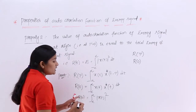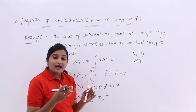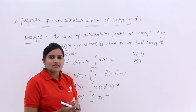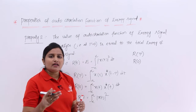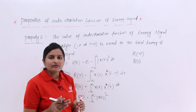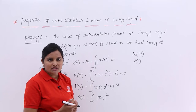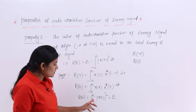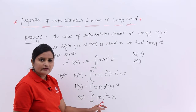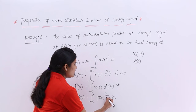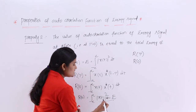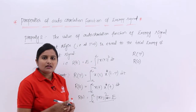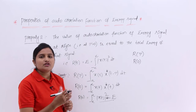This is R(0). But you know the formula for energy — when we discussed energy and power signals, energy of a signal is equivalent to the integral of the square of the signal. That means the integral of |x(t)|² dt gives you the energy of the signal. According to that, we can say this is nothing but the energy of the signal, because here also we are doing the integration of |x(t)|² dt. So that is why whatever value is there at the origin in the autocorrelation function, that gives you the energy.